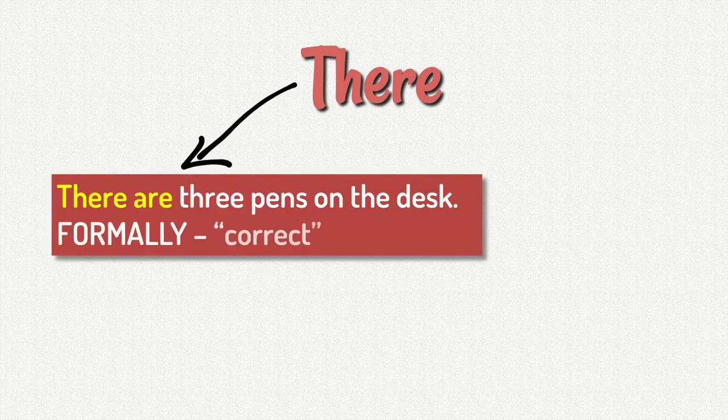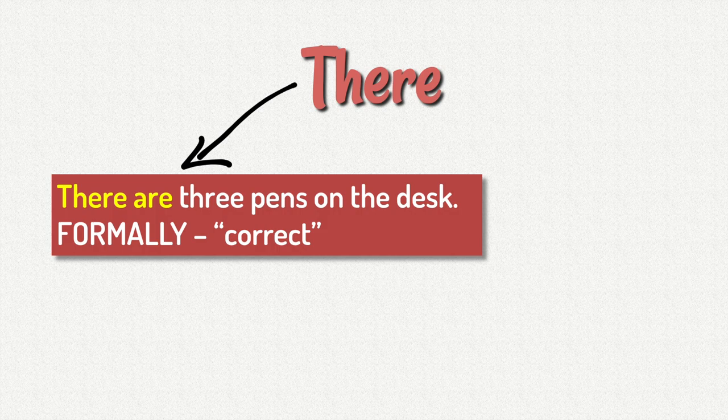So let's look at how there can be used formally or informally. The first one is the correct way, like in this example. There are three pens on the desk. So we say three pens, and that's plural. So that's why we need are. There are three pens on the desk. And this is formally, and it is correct.